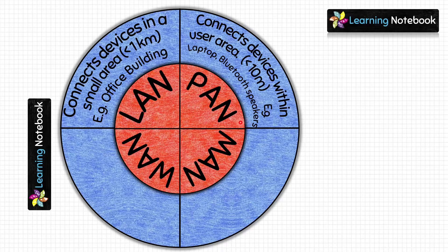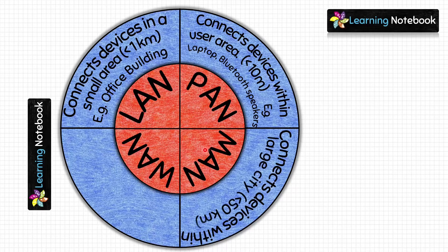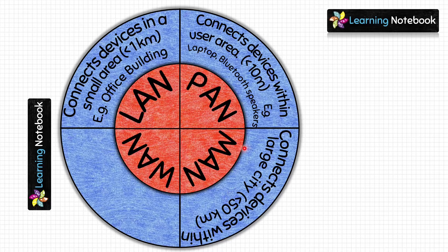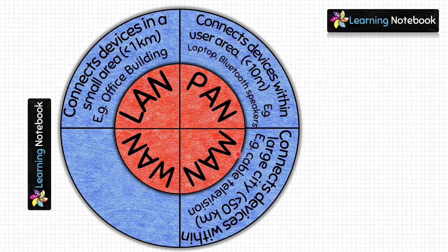Next let's write about MAN. MAN connects devices within a large city or town — usually within 50 kilometers. MAN is larger than LAN but smaller than WAN. One of the best examples of MAN is a cable television network.